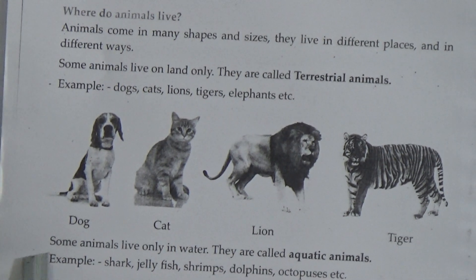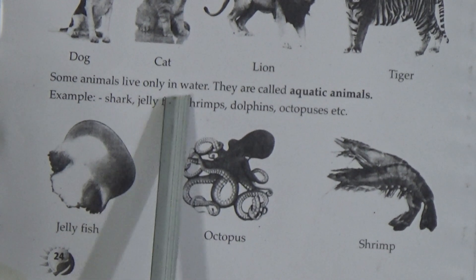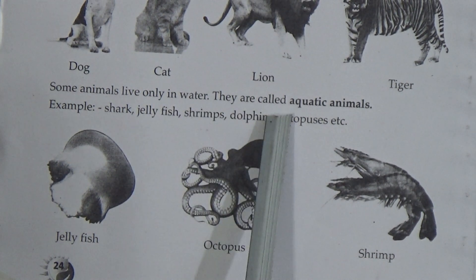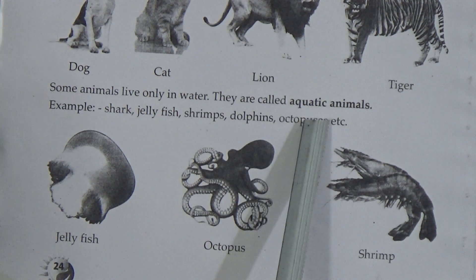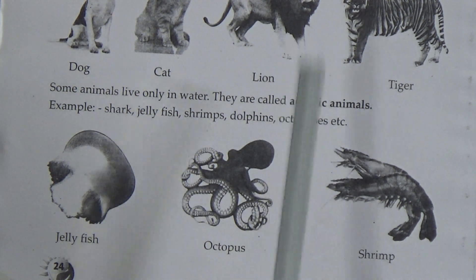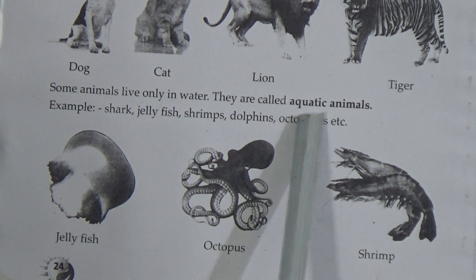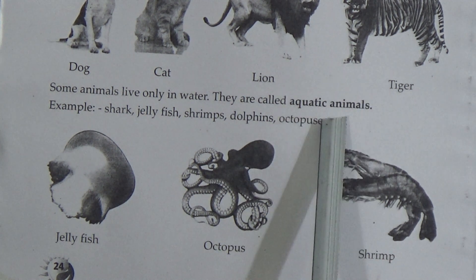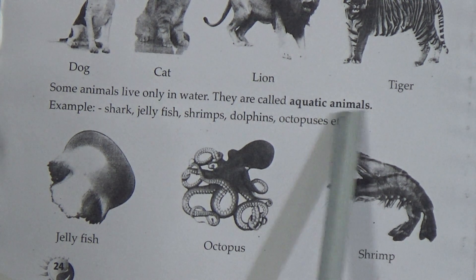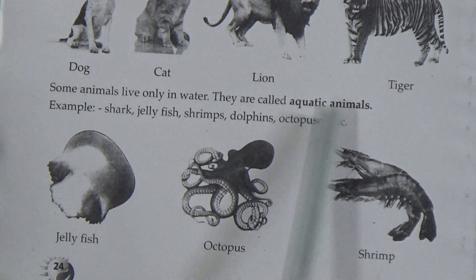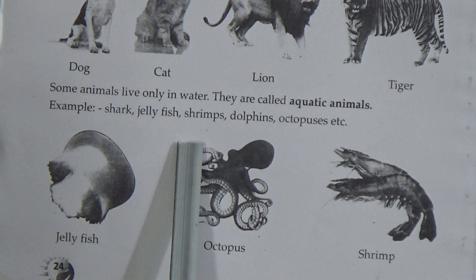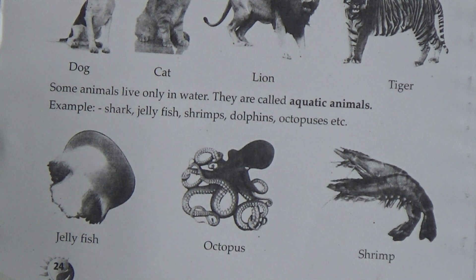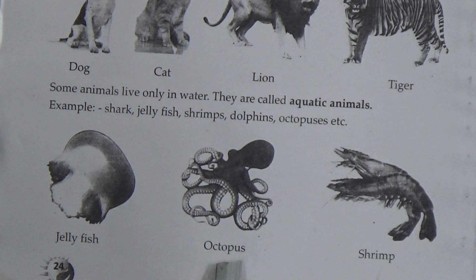Some animals live only in water. They are called aquatic animals. Aquatic spelling is A-Q-U-A-T-I-C. Aquatic animals. Examples include shark, jellyfish, shrimps, dolphins, octopuses, etc. And here is the picture of jellyfish, octopus, shrimp.